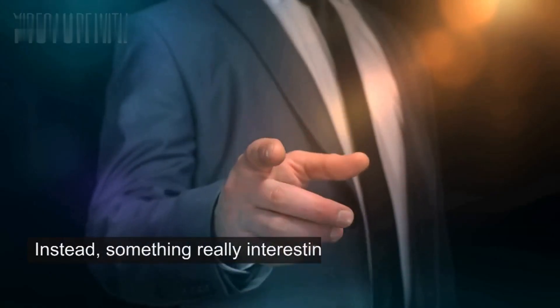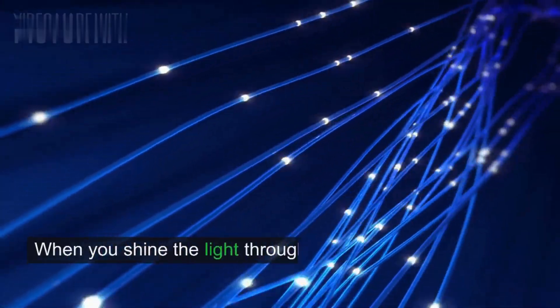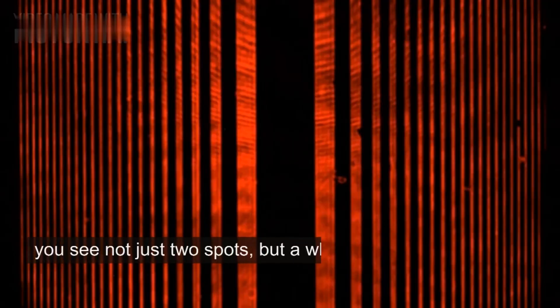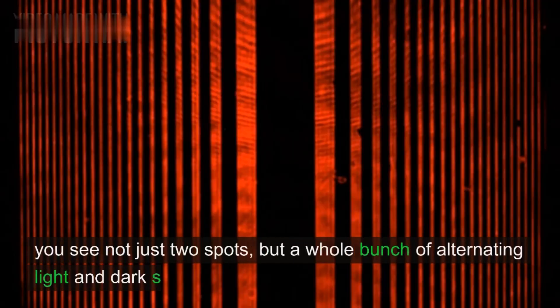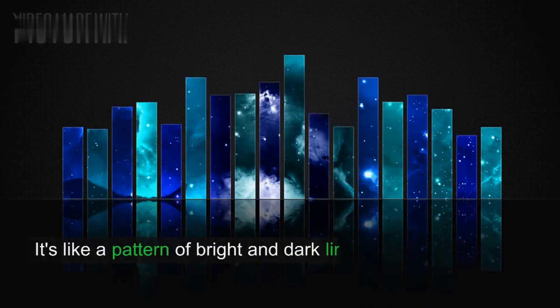What do you expect to see on the other side? Two little circles of light. But that's not what happens in reality. Instead, something really interesting occurs. When you shine the light through the slits, you see not just two spots, but a whole bunch of alternating light and dark stripes on the screen. It's like a pattern of bright and dark lines.